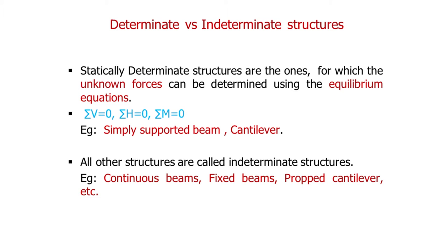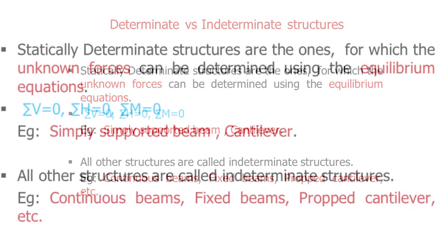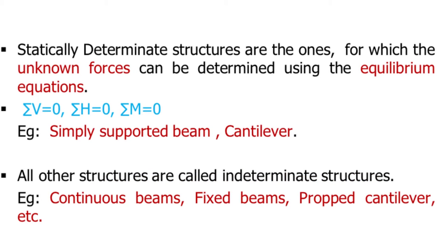The major classification in structural analysis is that structures can be classified into determinate structures and indeterminate structures. Determinate means that if you take a particular structure and can find out the unknown forces using the equilibrium equations — sigma M equals zero, sigma H equals zero, and sigma V equals zero — then we call that structure a determinate structure.